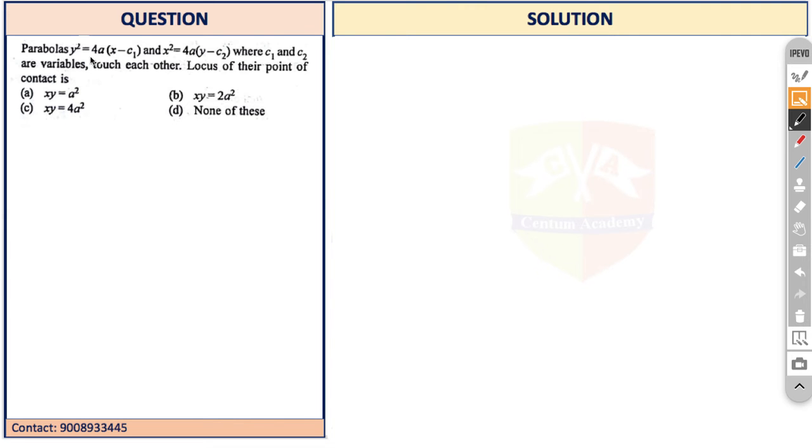The question says parabolas y² = 4a(x - c₁) and x² = 4a(y - c₂) where c₁ and c₂ are variables. Now friends, c₁ and c₂ are like parameters - parameters means they are constants only but they keep on changing.